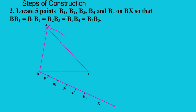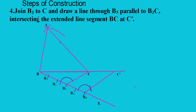Step 3: Locate 5 points B1, B2, B3, B4, and B5 on Bx so that BB1 = B1B2 = B2B3 = B3B4 = B4B5. Step 4: Join B3 to C and draw a line through B5 parallel to B3C, intersecting the extended line segment BC at C'.